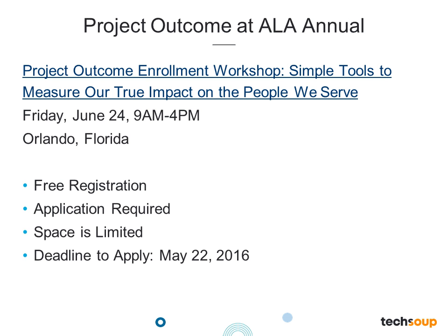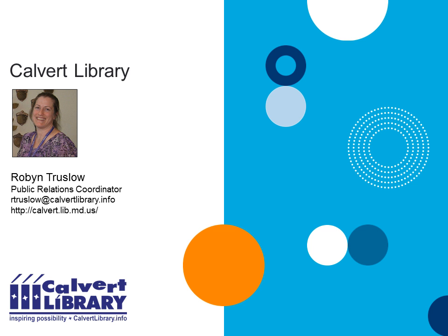If you are attending the ALA Annual Conference in Orlando in late June, there will be a free Project Outcome Enrollment Workshop where you can learn more about how to use Project Outcome in your library at a deeper level. This workshop is free, but you do have to apply, and space is limited. The deadline to apply is May 22. We'll include that link in the archive as well. Now let's hear from Robin, who is going to tell us about how they used some of the Project Outcome surveys to measure outcomes at her library.